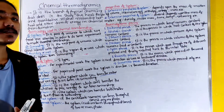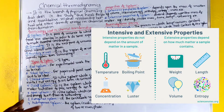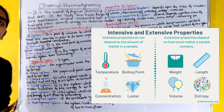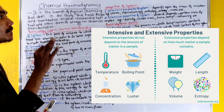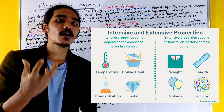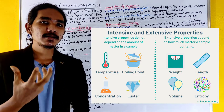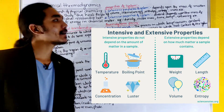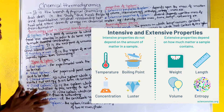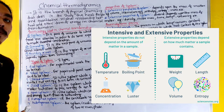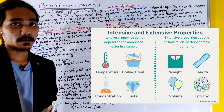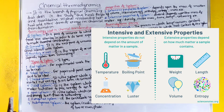The extensive property of a system is the property that depends on the mass of the object. Examples of extensive properties include volume, internal energy, entropy, and mass.